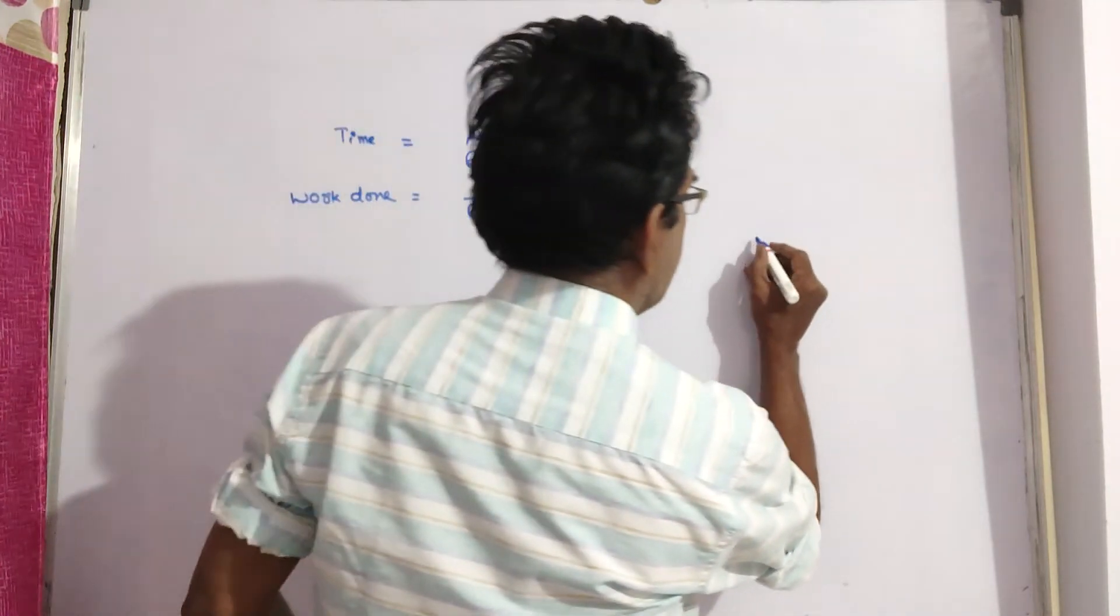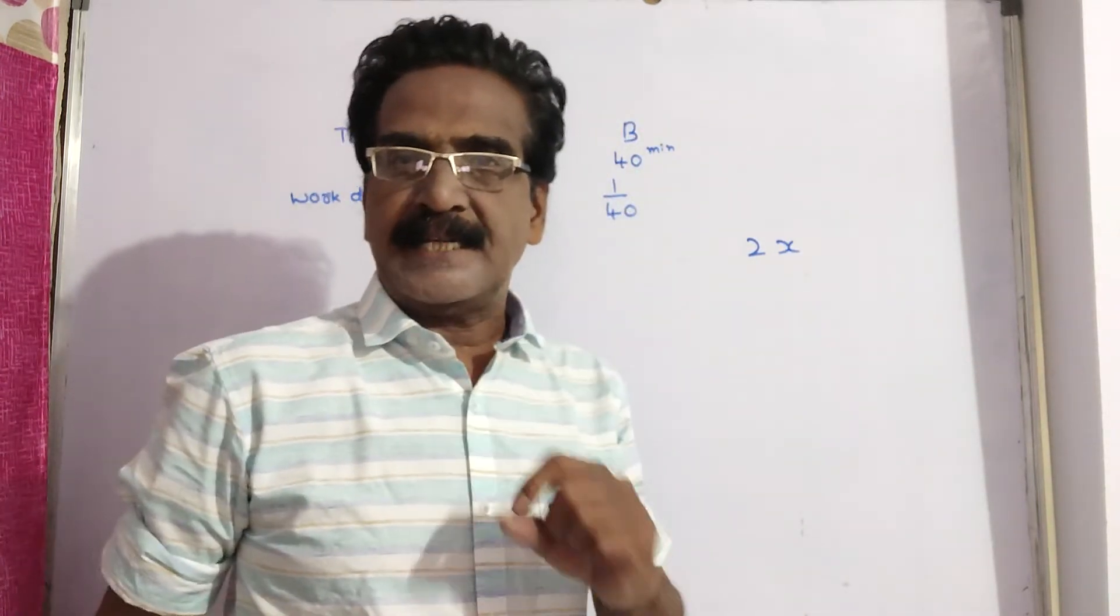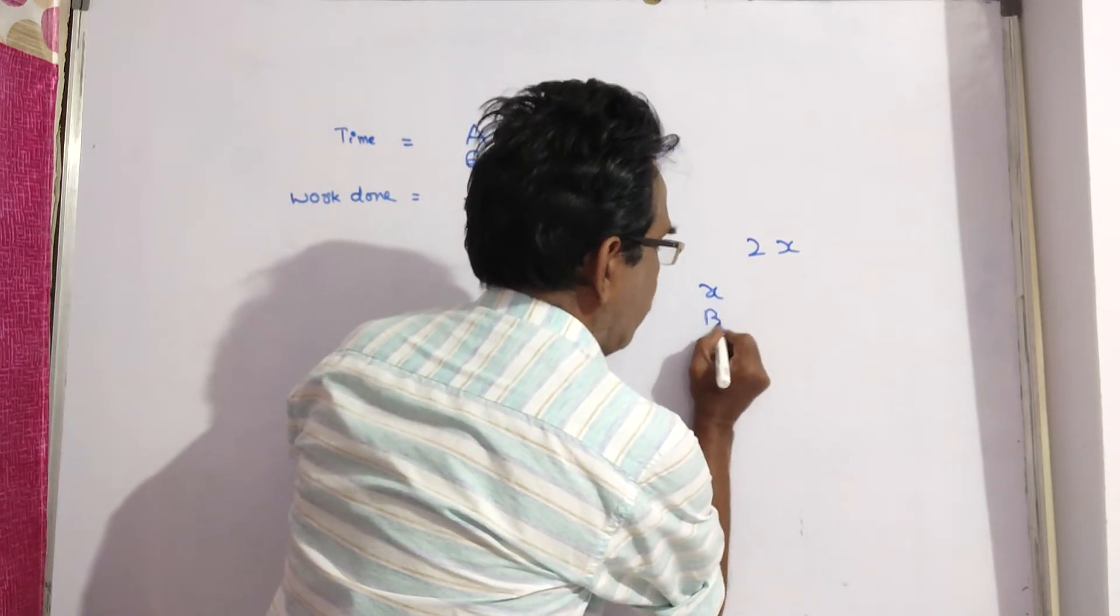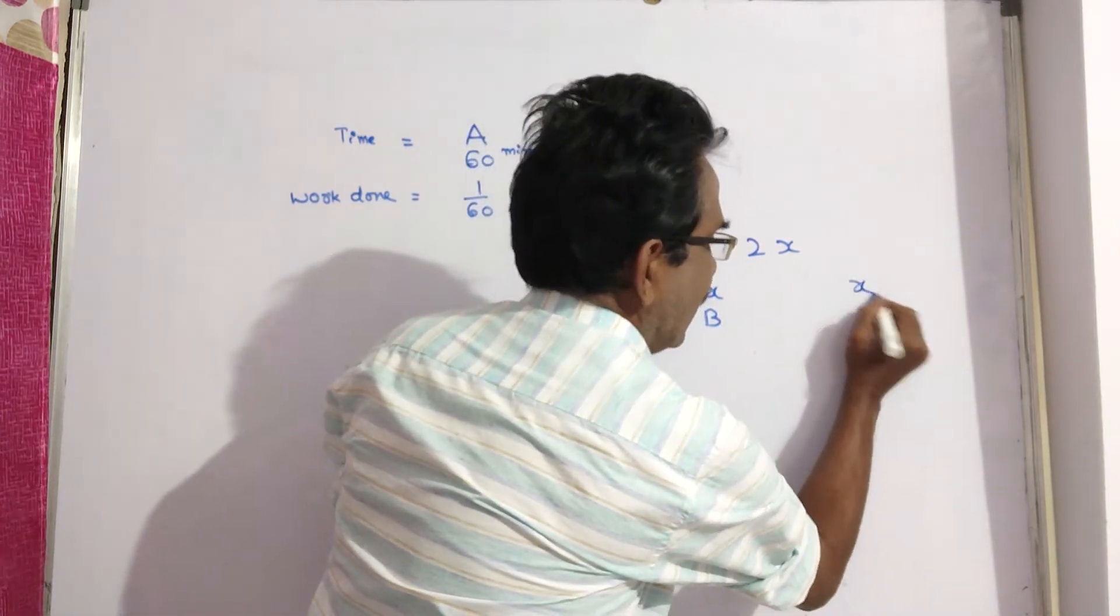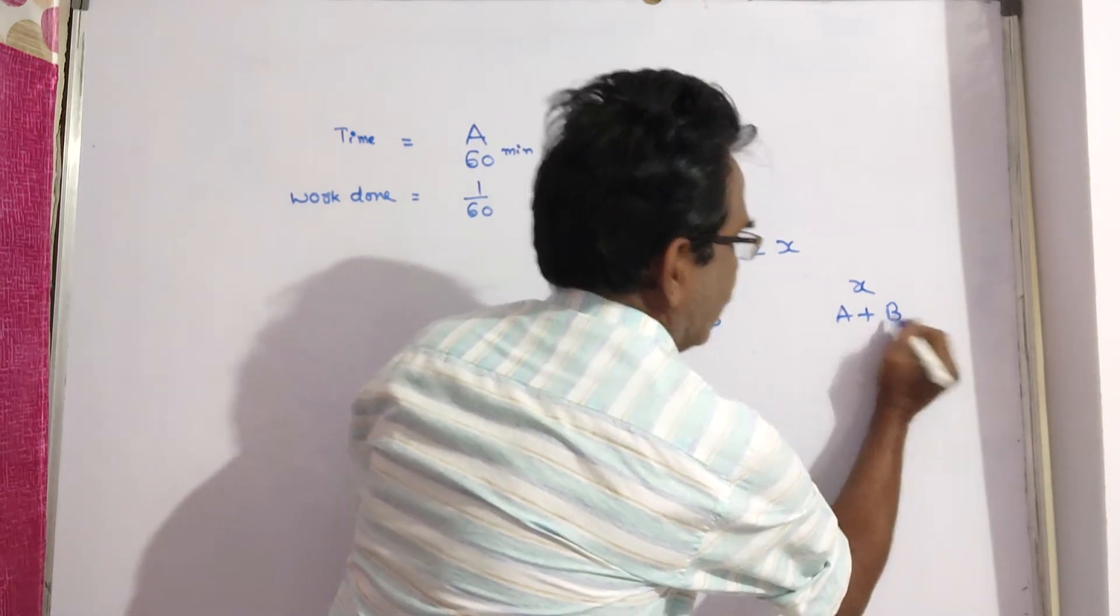Say the total time taken is 2x minutes. Then x minutes, pipe B works and another x minutes, A plus B together works.